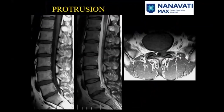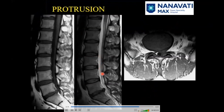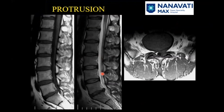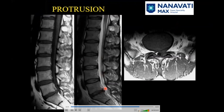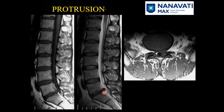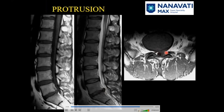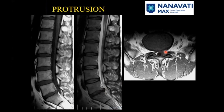Here is a patient who has come with backache and radiating pain in the left lower limb. What we see here is a degenerated posterior herniated disc which has a broad base and narrow apex. So this is a left paracentral protrusion of the L5-S1 disc causing compression of the thecal sac.